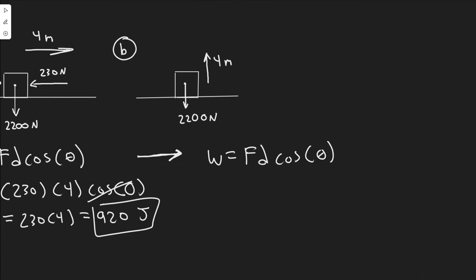So they tell us that the weight of the box is 2200 newtons. So we know we're going to have to apply a 2200 newton force upwards in order to counteract it. So we know F is equal to 2200.